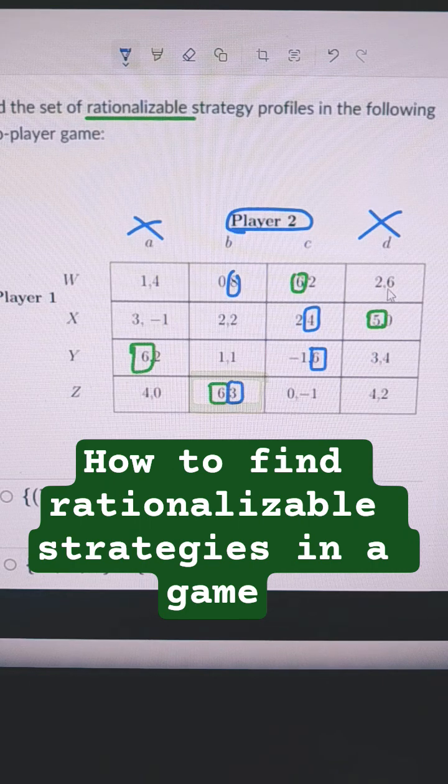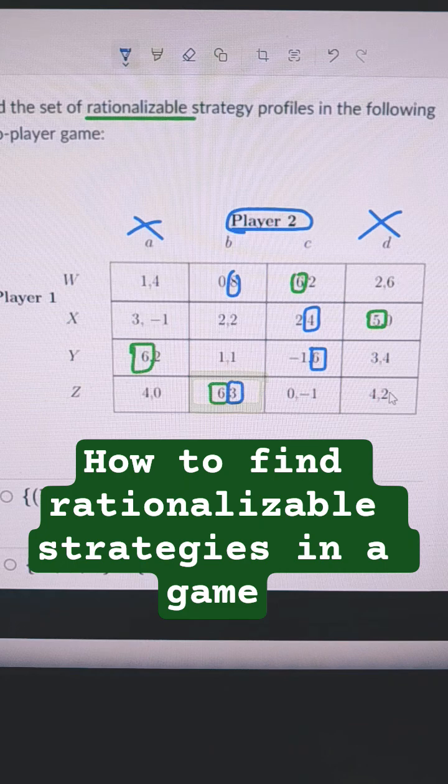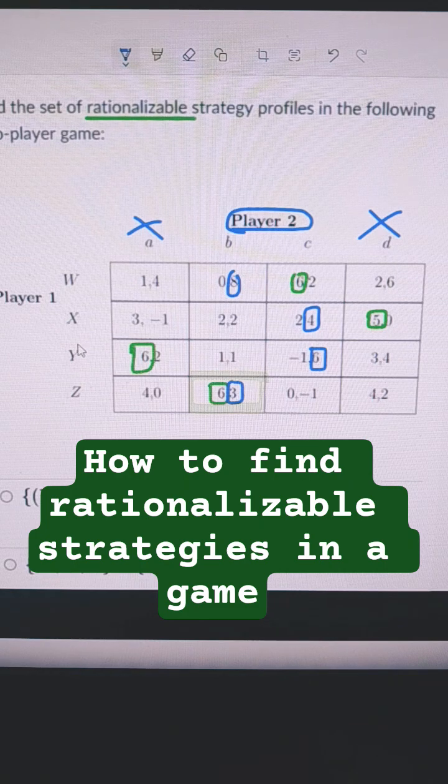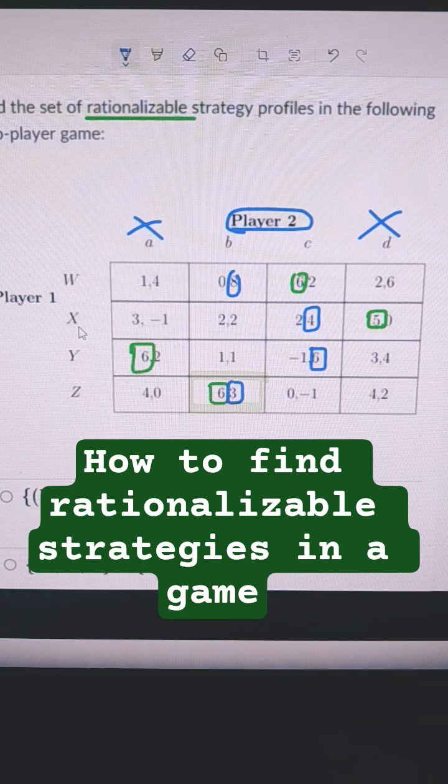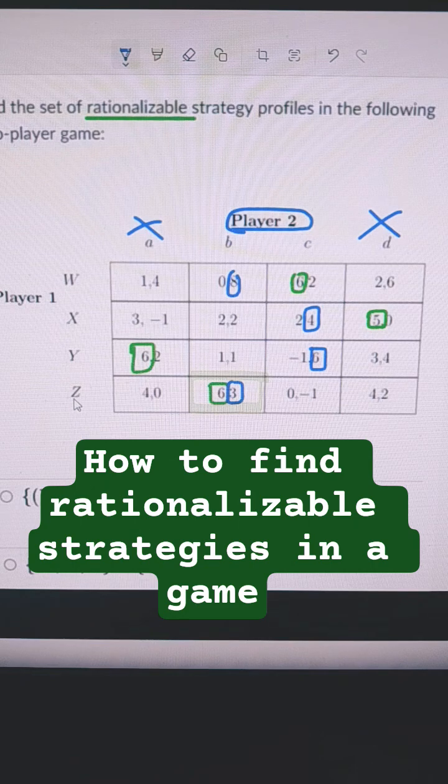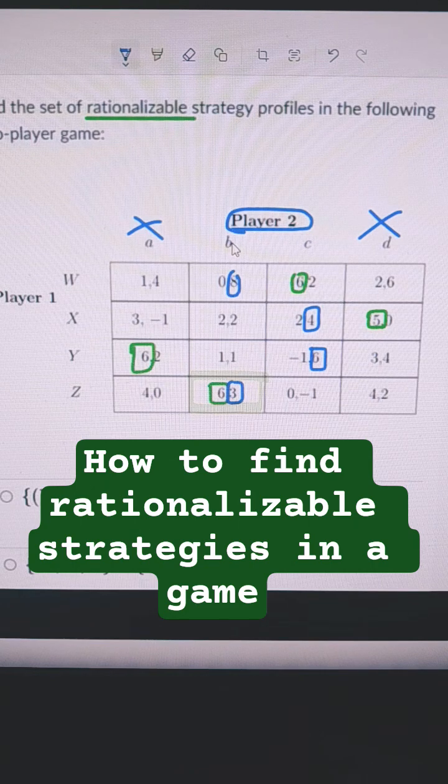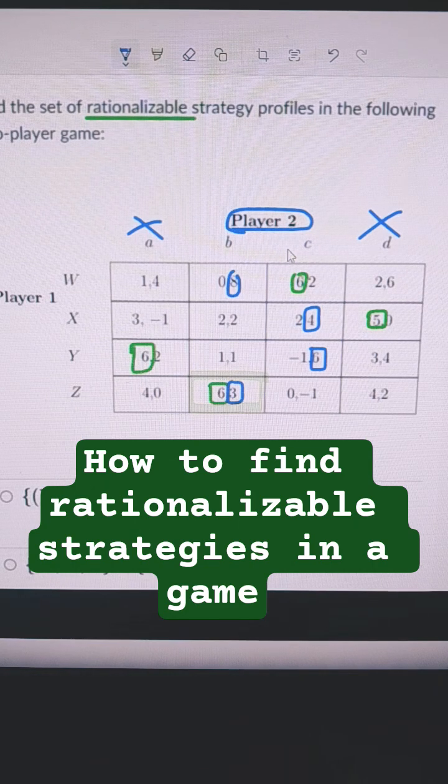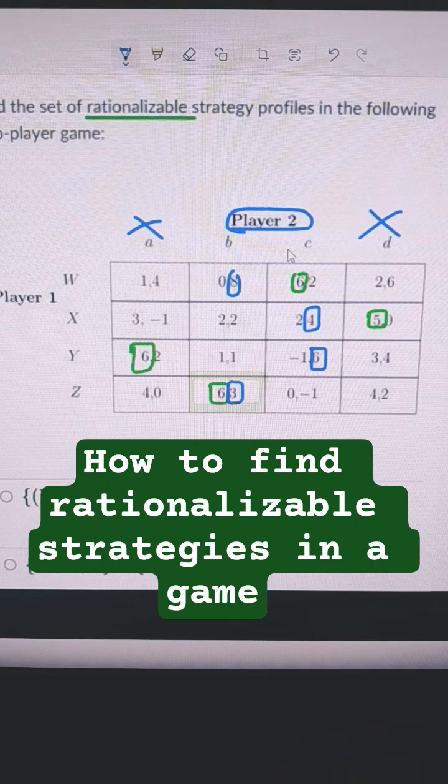So D is also dominated. So the way you would write this, you would write W, X, Y, and Z, and then times B and C. Those are the possible strategies in this game.